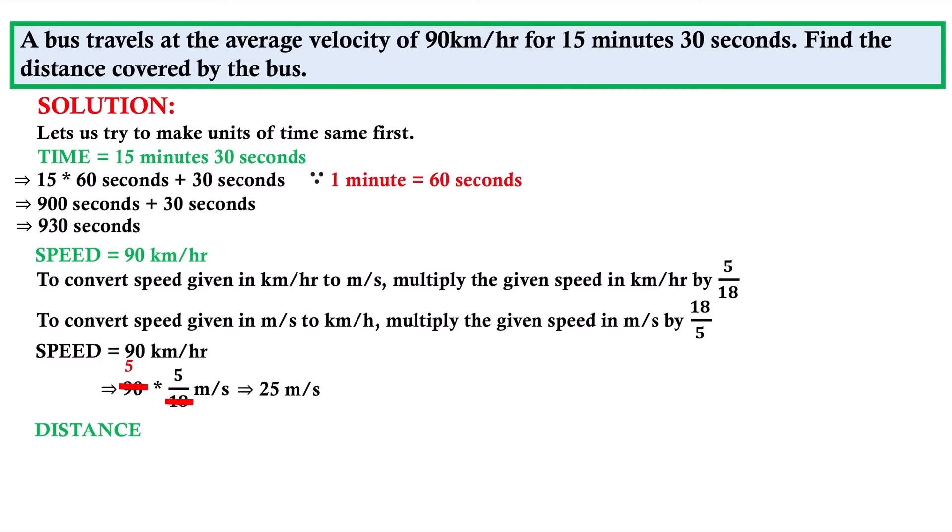Now the distance formula - nothing new. Distance equals speed into time. Speed is 25 meter per second. Time is 930 seconds. If you multiply this, I get 23,250 meters.